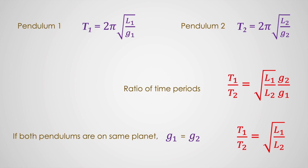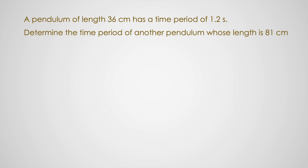Let us solve one simple problem. A pendulum of length 36 centimeters has a time period of 1.2 seconds. What will be the time period of another pendulum whose length is 81 centimeters? We have the data: L1 is 36 centimeters, L2 is 81 centimeters, T1 is 1.2 seconds. What is T2?